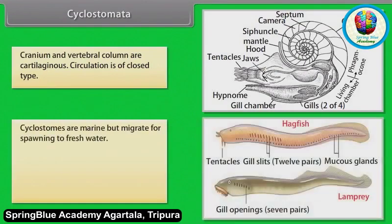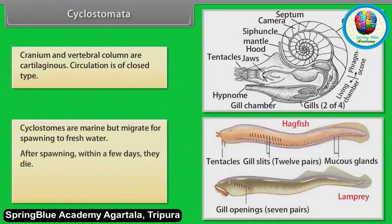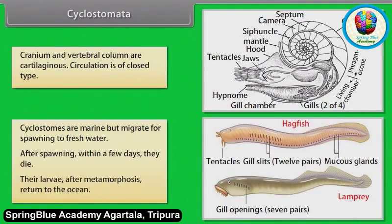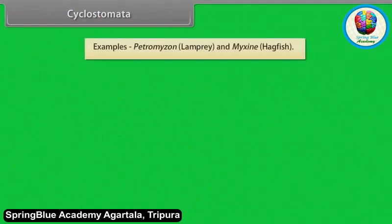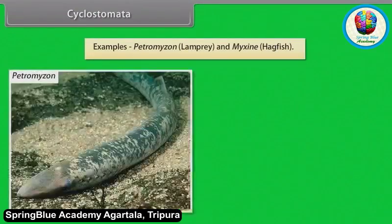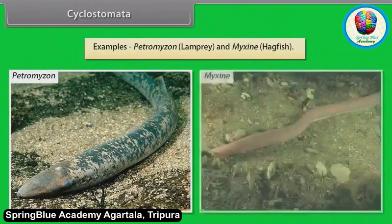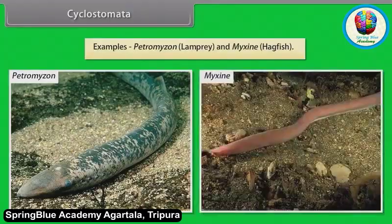Cyclostomes are marine but migrate for spawning to fresh water. After spawning, within a few days, they die. Their larvae, after metamorphosis, return to the ocean. Examples: Petromyzon (Lamprey) and Myxine (Hagfish).